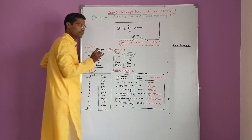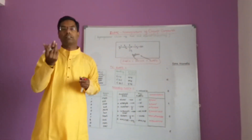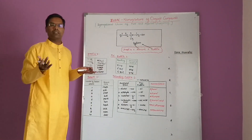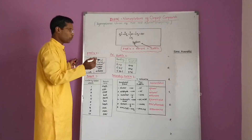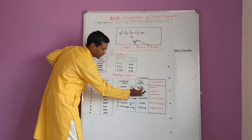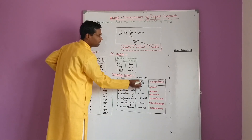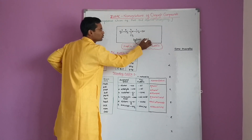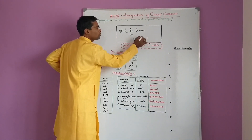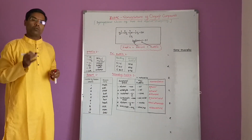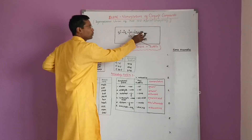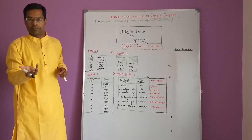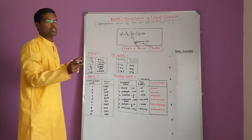The functional group here is OH. An atom or group of atoms that determines the chemical properties of an organic compound is called a functional group. The OH group is the functional group in this carbon chain. Therefore, the secondary suffix is OL. So E is replaced by OL. The positional number of OH is 1, giving us 1-OL. We must represent the position of OH because it is possible that OH may be attached to the second or third carbon — whatever the possibilities in the selected longest chain.